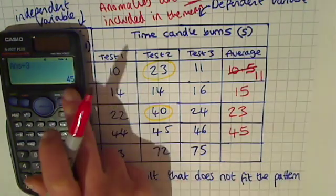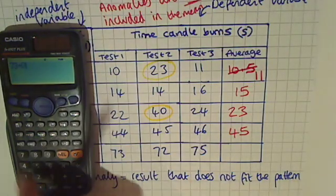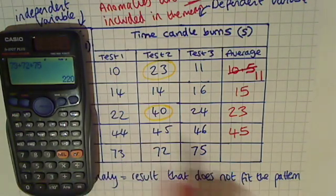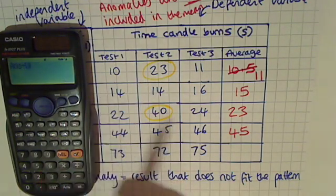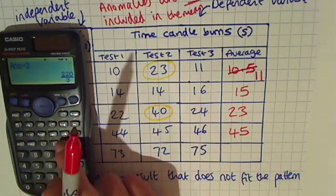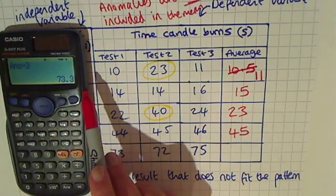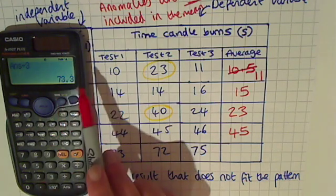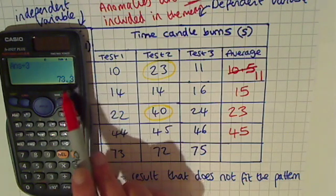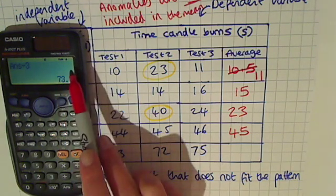And finally, for the bottom row, we've got 73 plus 72 plus 75. Press your equals. Then we've used three numbers again, so we divide by three and we get a fraction again. Press the SD button and that will give us 73.3. In this case, the point three is less than point five, so we round down. We don't go up to 74; we go down to 73.